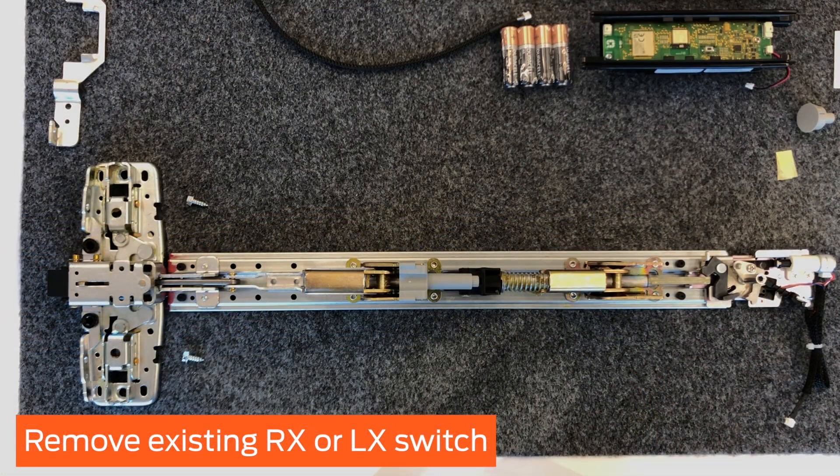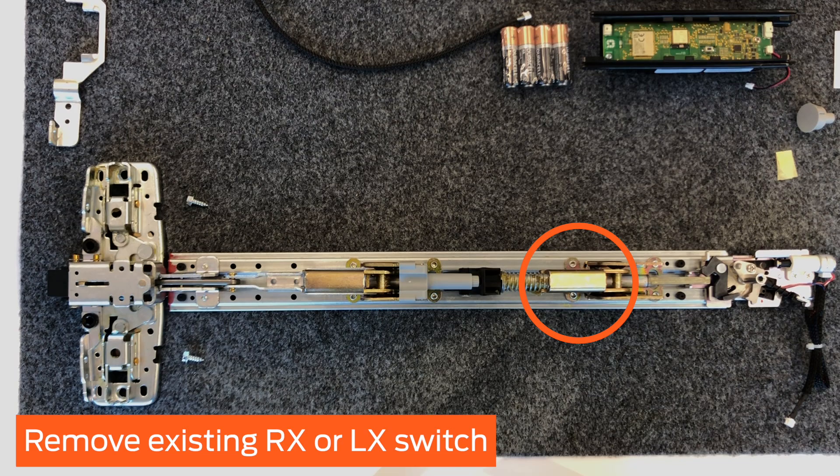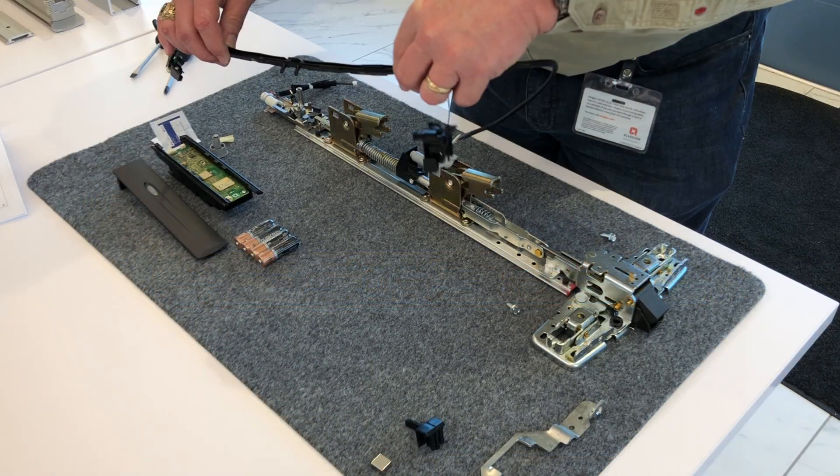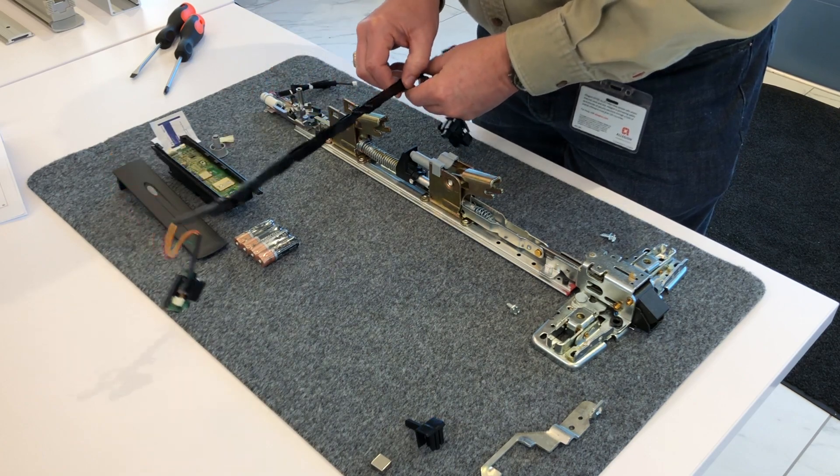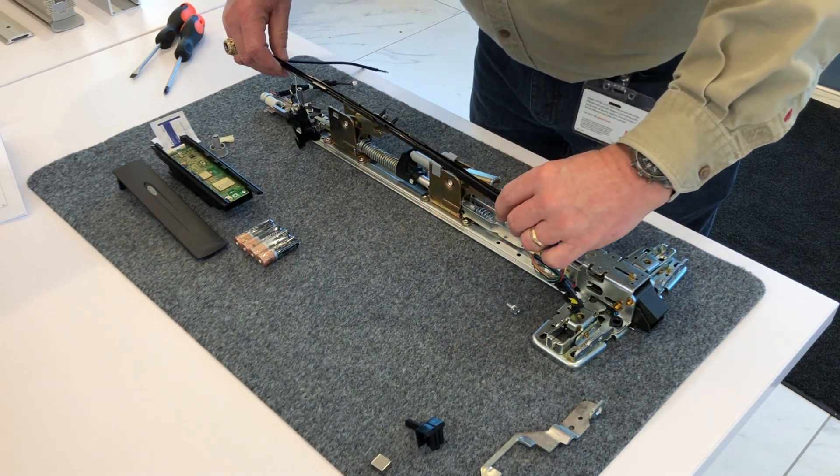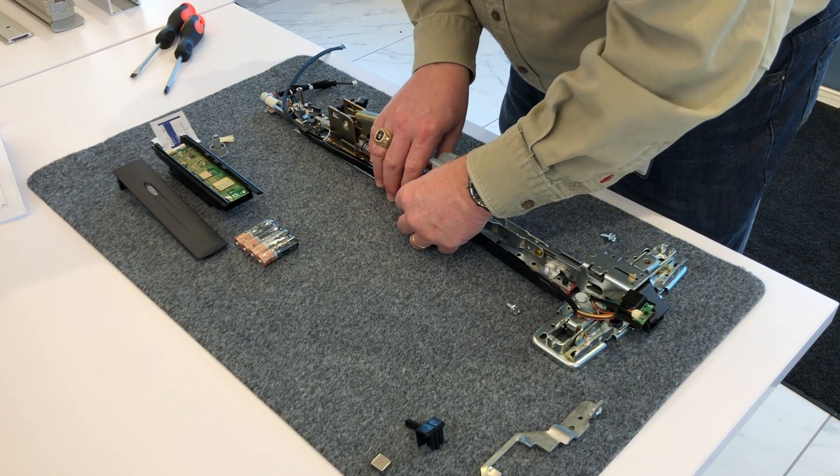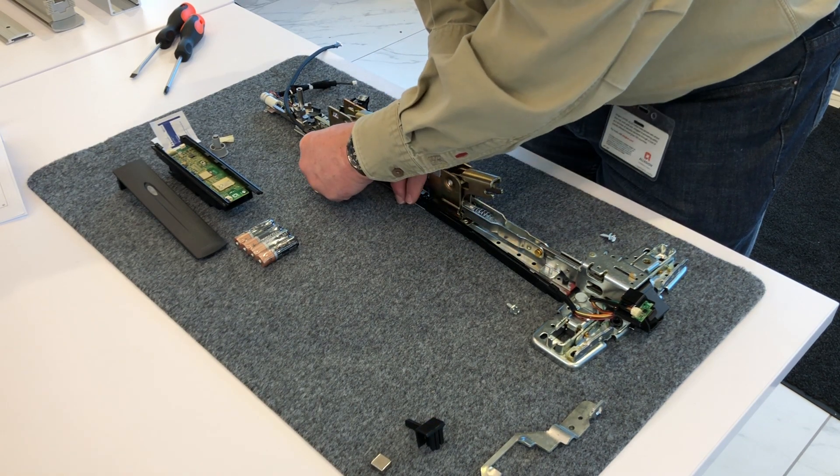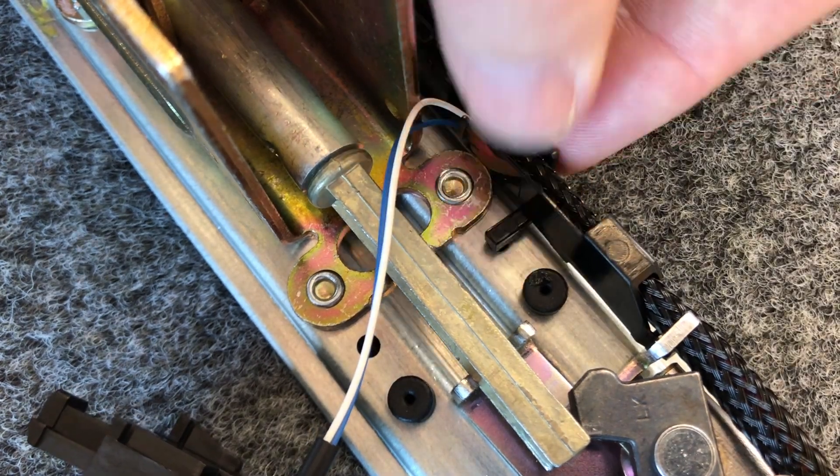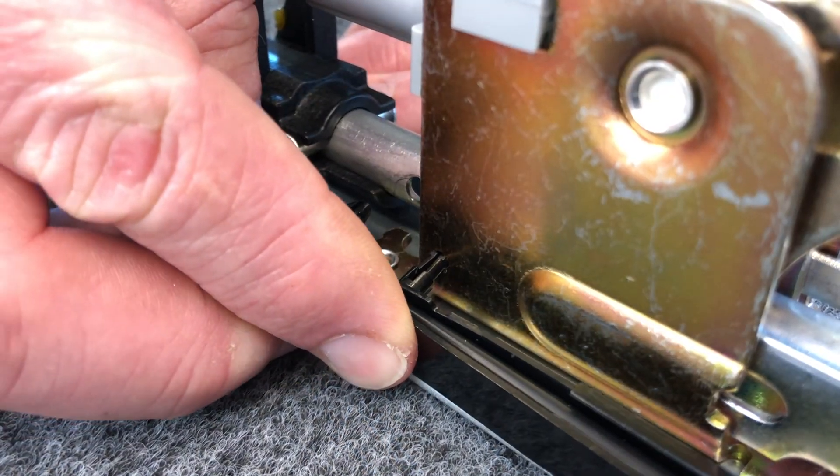If your device has an RX or LX switch, remove and discard it. Orient the raceway wiring harness so that the cable is on the opposite end of the center case. Then, carefully attach the harness to the base plate, snapping it into the three locations along the base plate, as shown.